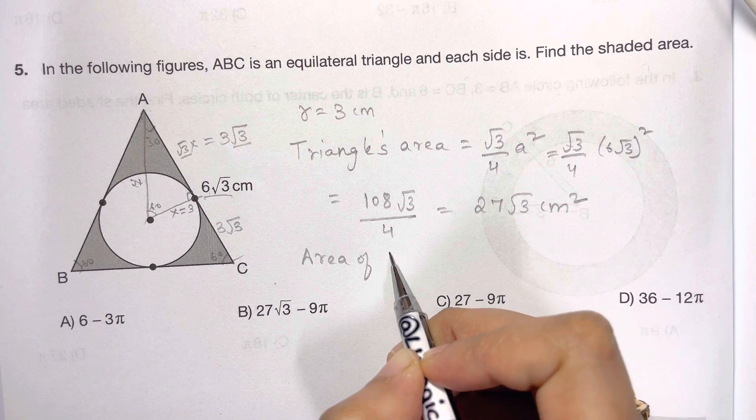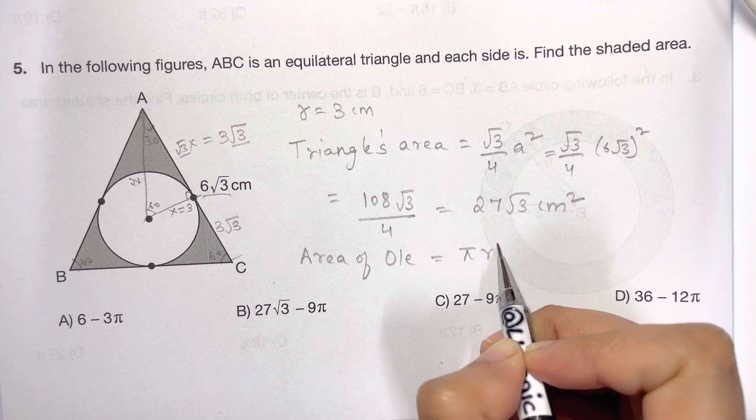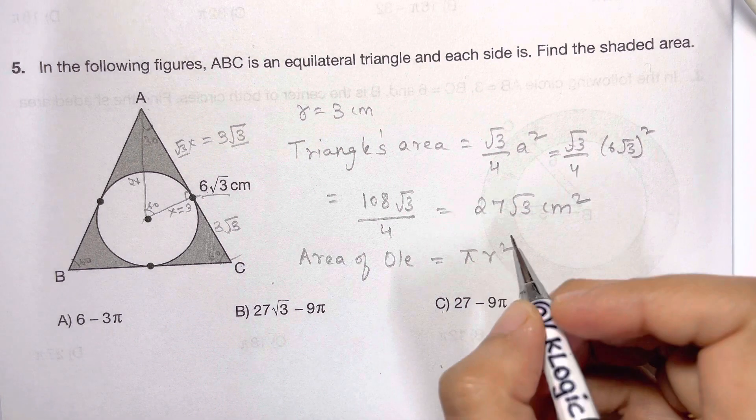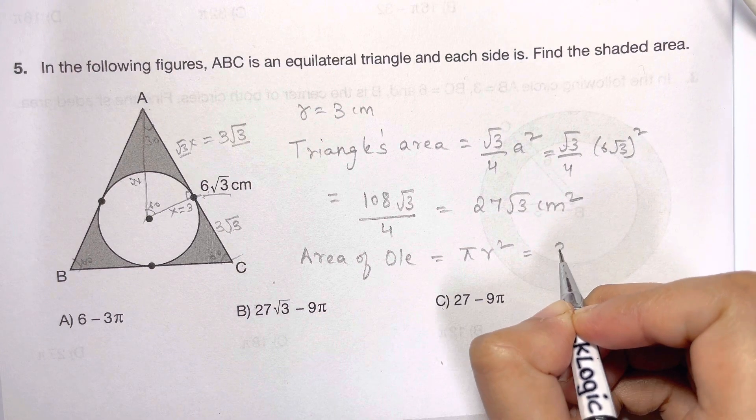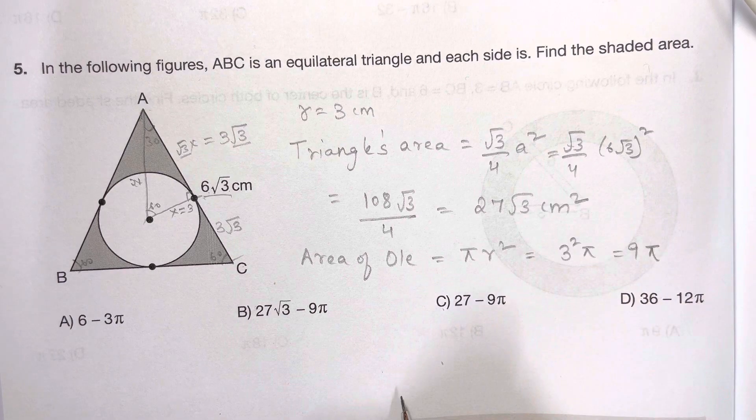Now let's find the area of the circle. Area of the circle is equal to πr². Of course, what is the radius? We've got that, it's equal to 3. So we have 3² times π, that is equal to 9π.